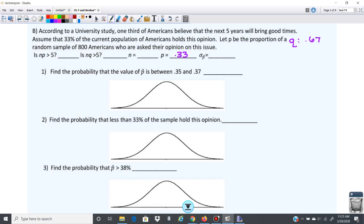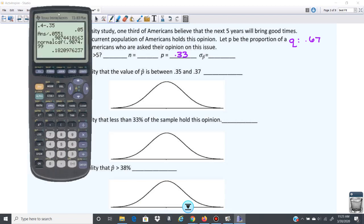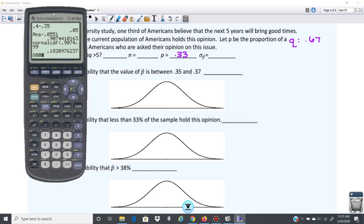So NP is going to be 800 times 0.33. And then NQ is going to be 800 times 0.67. So those are both greater than five. So we're good there, 264 and 536.